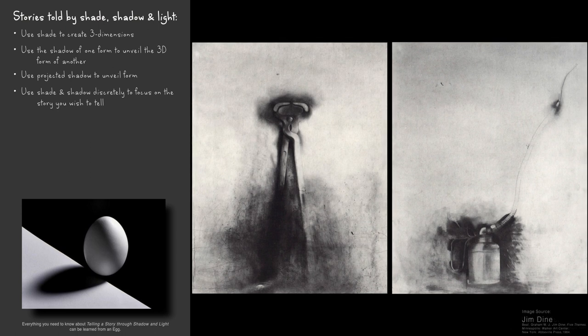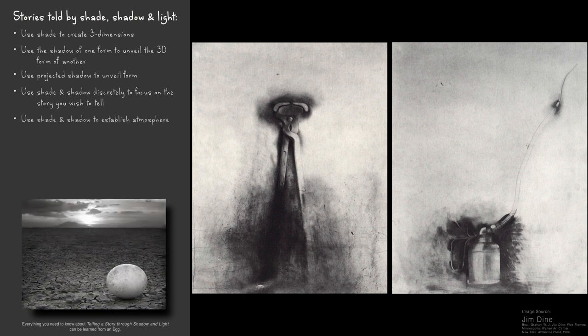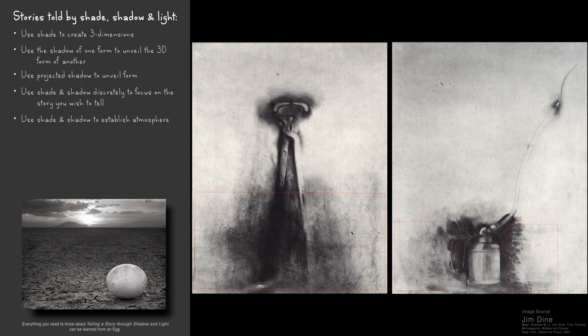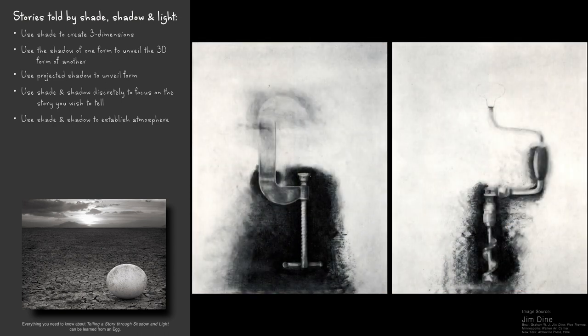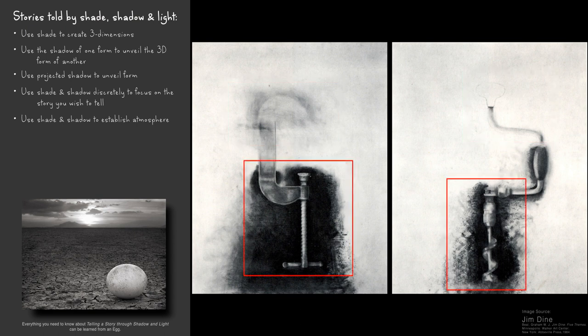In these drawings by artist Jim Dine, shade and shadow are used discreetly to focus the drawing on the story he wishes to tell. Simultaneously, he uses shade and shadow to also establish atmosphere. In these two drawings, he effectively omits what is not important to his story, and he uses high contrast shading to focus our attention on what is most important to his tale.